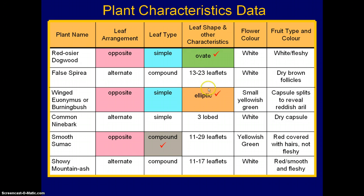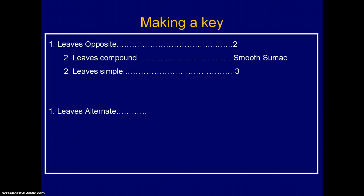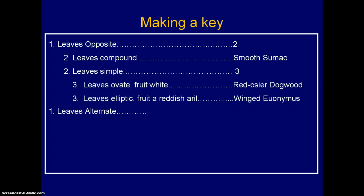We have ovate leaves for dogwood and elliptic for burning bush. Now these could be a little ambiguous, so just to be sure, we can build in more than one characteristic to make sure we can differentiate the plants. In this case, one choice will be ovate with white fleshy fruit, and the other will be elliptic with a capsule that splits — winged euonymus or burning bush. So in building our key: number 3, leaves ovate, fruit white — red osier dogwood; or leaves elliptic, fruit reddish arrow — winged euonymus or burning bush. So we've built that part of the key.